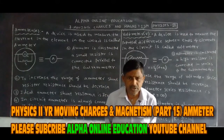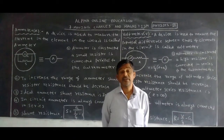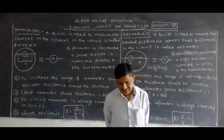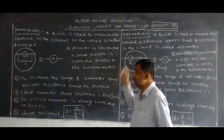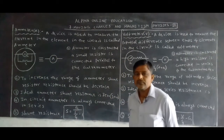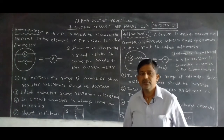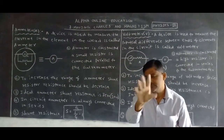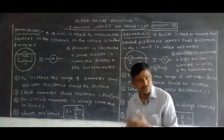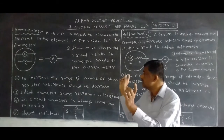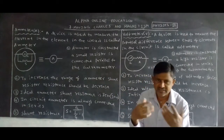This is the last topic in this chapter and very important for 2-mark questions. Ammeter and voltmeter — how we can get these in the examination for 2 marks. How the ammeter is designed is one 2-mark question. How the voltmeter is designed is another 2-mark question. Write the differences between ammeter and voltmeter — this is another 2-mark question.